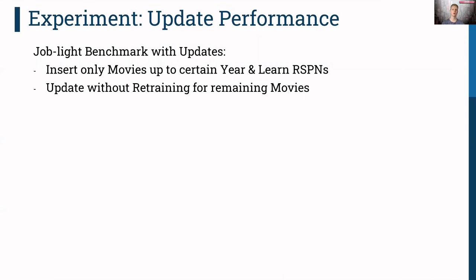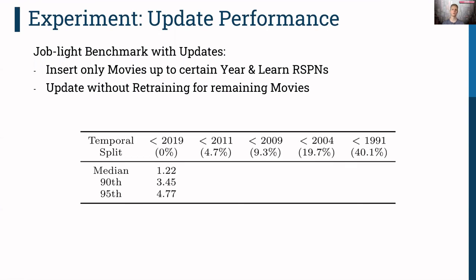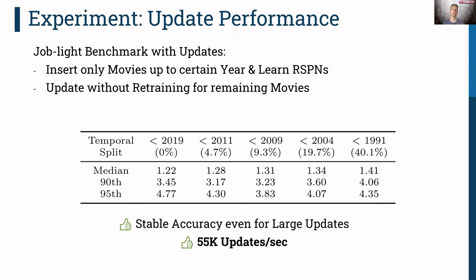We also investigated the effectiveness of our update procedure using the JOB-light benchmark. This time we only insert movies up to a certain year, learn the models as before, then update without retraining for the remaining movies, and compare accuracies on the full benchmark. In the first configuration no updates are present; in the second, we update with 5% of the data — and the accuracies are quite stable. We experimented with update rates up to 40% and still see stable performance. Besides retaining high accuracy, we are also very efficient, achieving 55,000 tuples per second as our update rate.